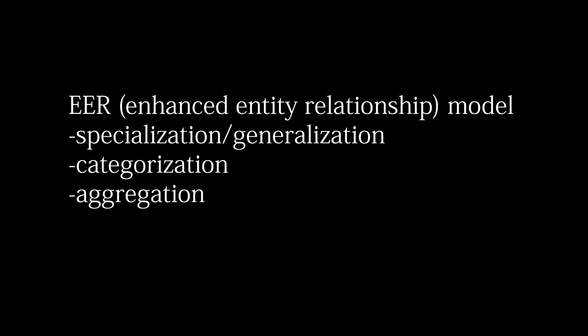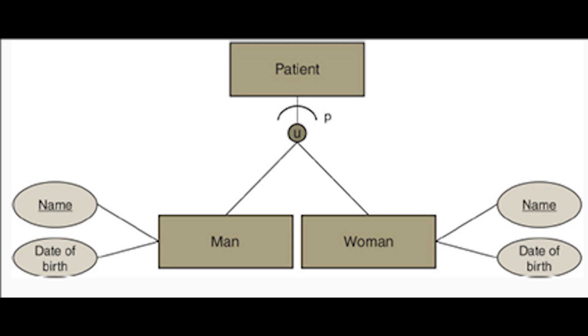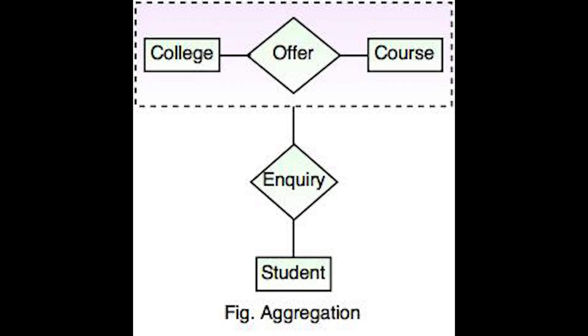Categorization is a concept where a category has a subclass with several potential superclasses, each being a different entity type. A category is a collection of entities that is a subset of the union of the superclasses, represented using a circle with a U in it. Inheritance here means a member entity inherits only the attributes and relationships of its superclass. Like specialization, it can be total or partial. Aggregation is the third concept in the EER model, combining entity types related by a particular relationship type — the aggregated type has its own attributes and also participates in a relationship.